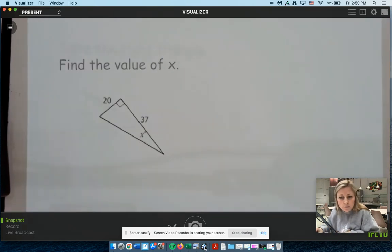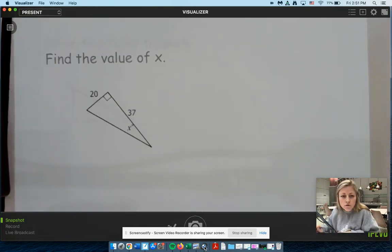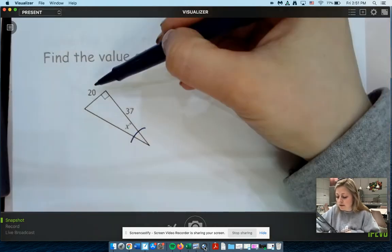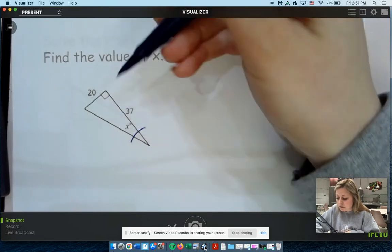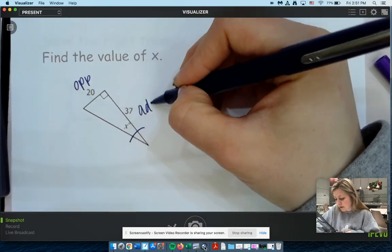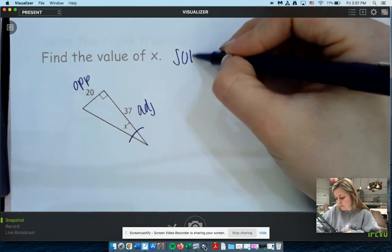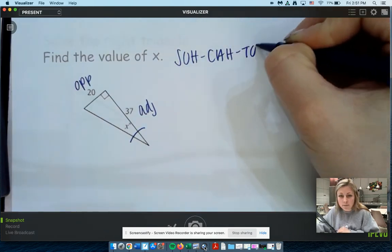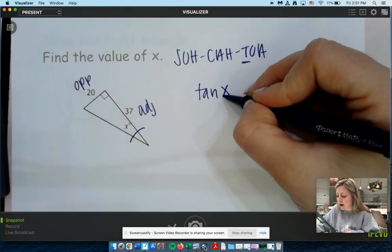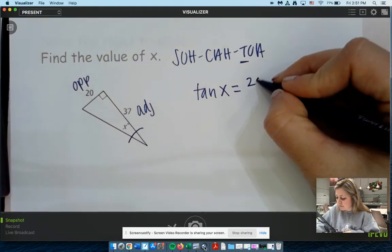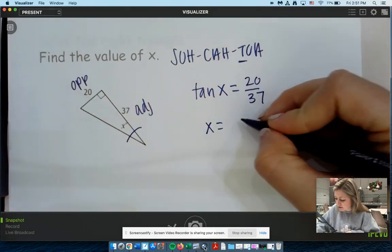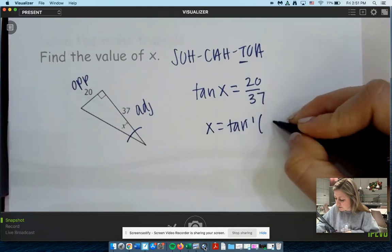Again, step one. Label your angle. Mark your sides. 20 is across. Opposite. 37 is touching your angle. And it's our adjacent. Which one uses opposite adjacent? That would be tangent. So tangent. We don't know our angles. We call it x. Opposite over adjacent. So 20 over 37. And remember to find your angle. You use the inverse.